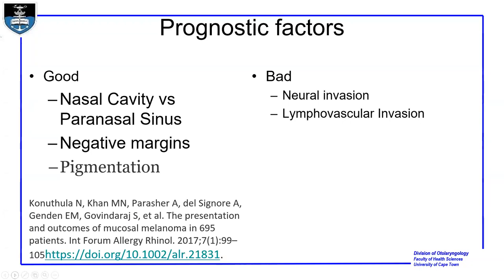In terms of prognostic factors, good prognostic factors include the tumor arising from the nasal cavity rather than a paranasal sinus such as the maxillary sinus, negative margins, and a higher degree of pigmentation. Bad prognostic factors include neural invasion and lymphovascular invasion.